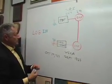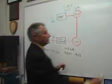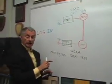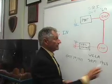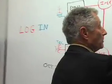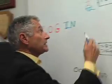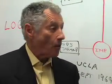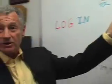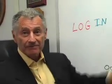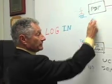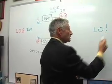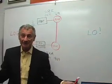What happened is Charlie typed the L and asked, 'You get the L?' and the answer was 'Got the L.' He typed the O — 'You get the O?' 'Got the O.' He typed the G — 'You get the G?' — and then, crash. The system crashed. The machine went down.